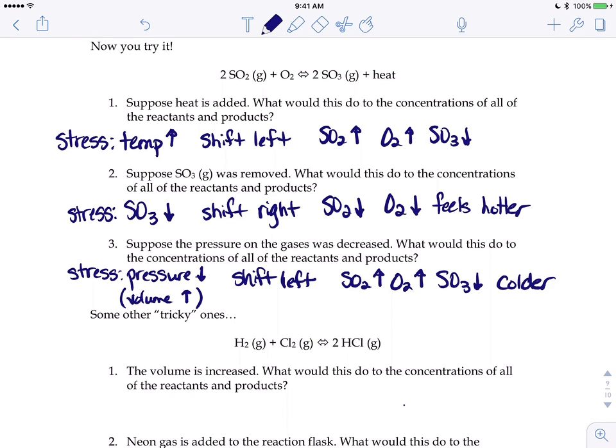For that first one, if we're adding heat we're increasing the temperature, which causes it to say 'hey it's too hot in here, let's try and cool ourselves down.' So you'd move away from the heat, shift left. That would make your SO2 and O2 increase, your SO3 decrease.